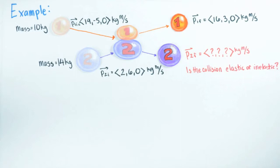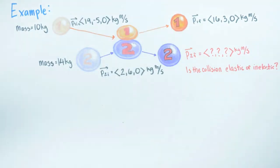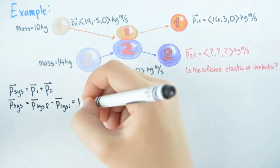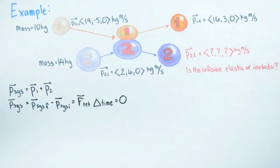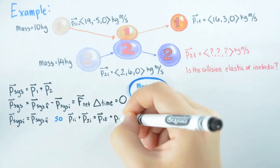applied to the system of both objects tells us that the system momentum vector P1 plus P2 is constant in time. Momentum is conserved. So it must be true that the initial system momentum, the system momentum before the collision is equal to the final system momentum, the system momentum after the collision. So let's write that out.